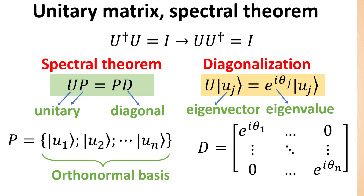We have a separate video dedicated to the procedure of matrix diagonalization, which we shall link to at the end of this video. The matrix P is constructed by concatenating the eigenvector kets, whose vectors form an orthonormal basis of the vector space. D is a diagonal matrix whose diagonal elements are the corresponding eigenvalues of U. It can be shown that these eigenvalues have the form e^{iθ_j}, where θ_j is real, so that the modulus of each diagonal element of D equals 1.